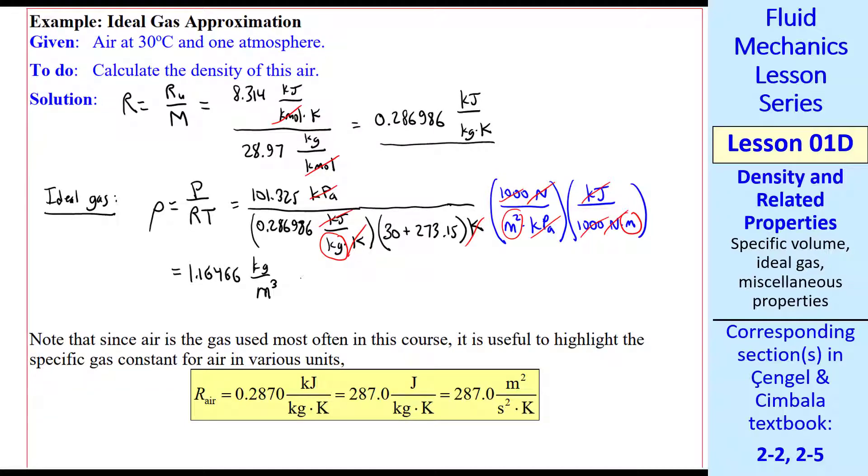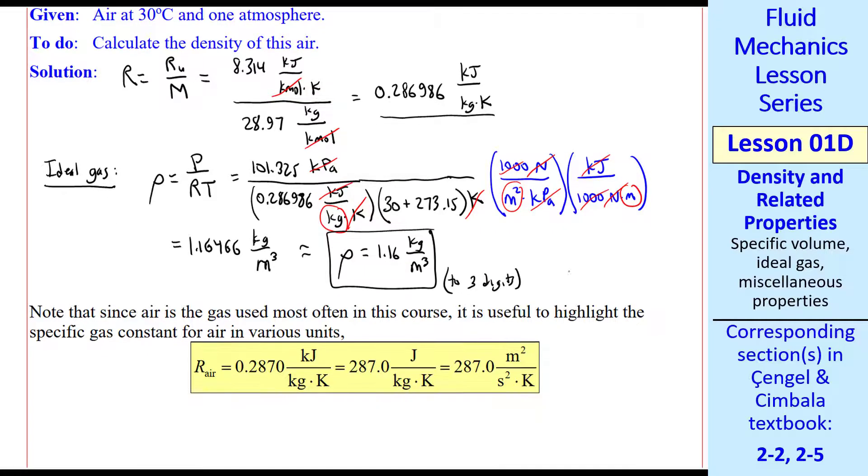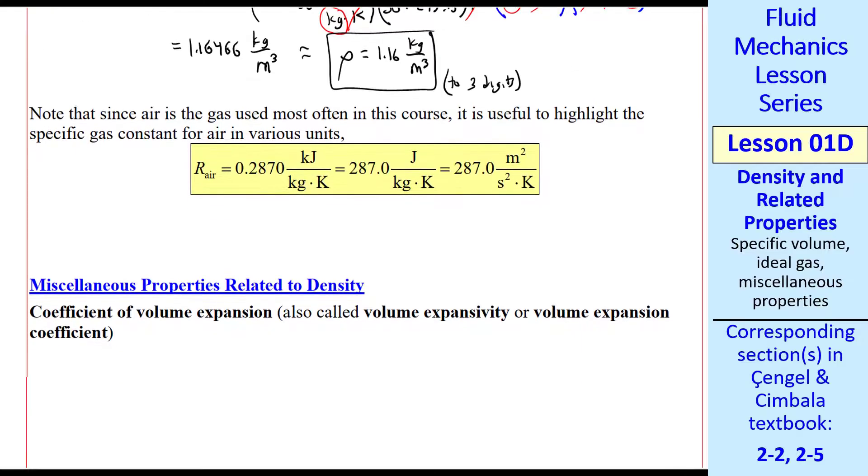I urge you to first write out the answer to several significant digits. And then in the end, give the answer to the appropriate number of significant digits. In this case, 3 for standard engineering analysis. Note that this R for air comes in handy a lot and is often used in this course.